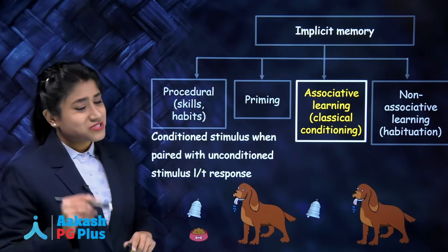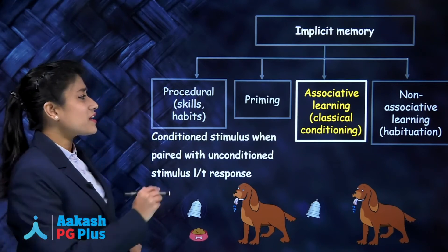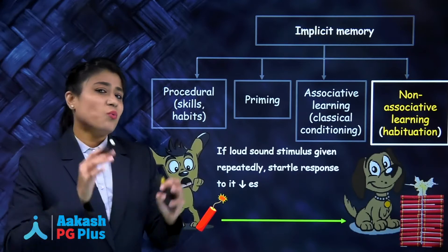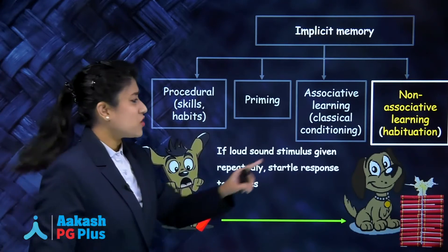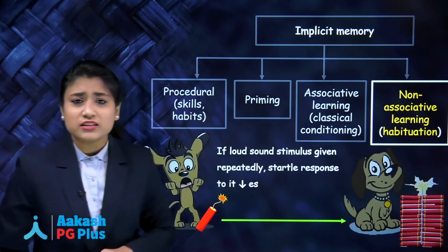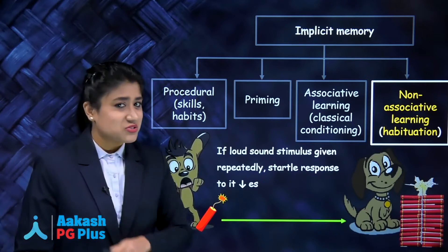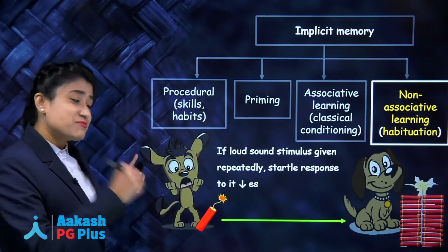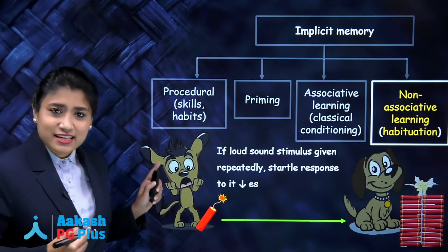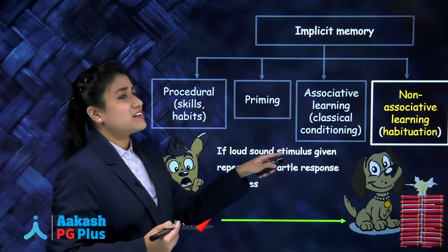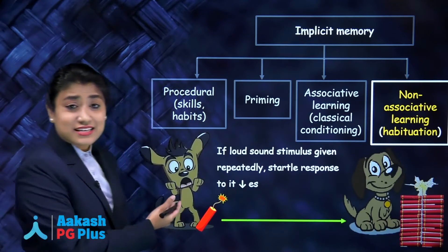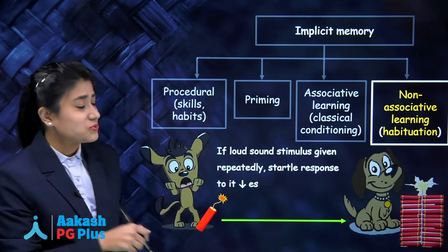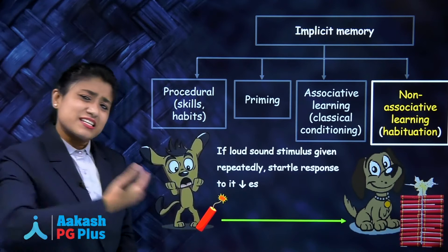Write it down — it's very important. Last is non-associative learning. Take the example of habituation, which comes under non-associative learning. If a loud stimulus is given repeatedly, the startle response to it decreases. You can see how the startle response decreases when the sound stimulus is given repeatedly.